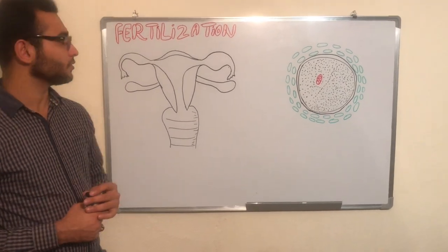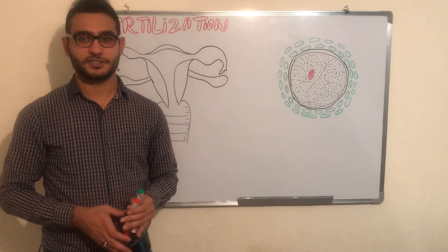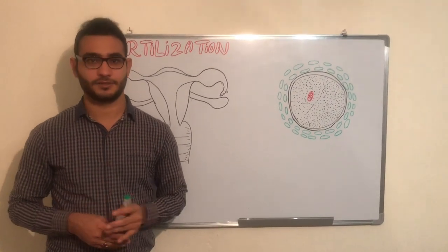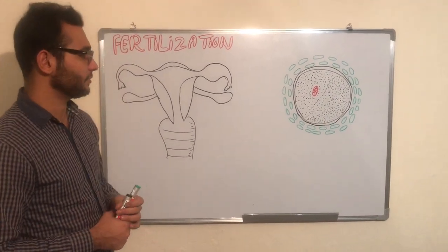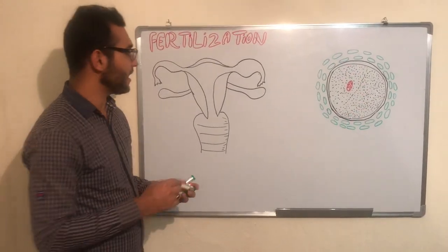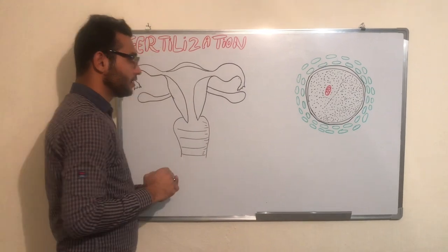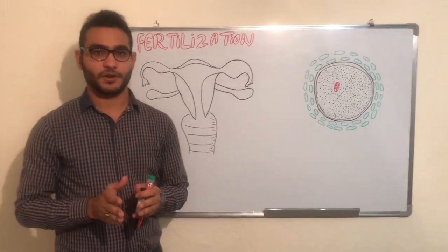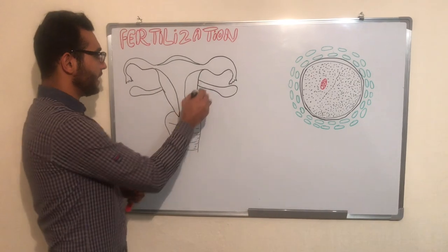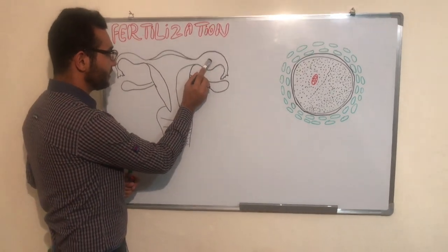Today our topic is fertilization. Fertilization is a fusion of the male and female gametes. The male gamete is the sperm and the female gamete is the ovum. Fertilization occurs in the ampulla region of the fallopian tube, where the sperm and ovum meet.